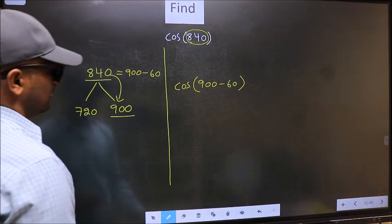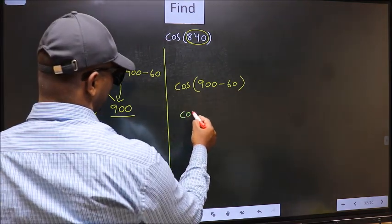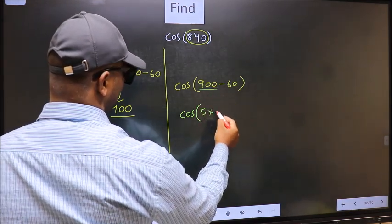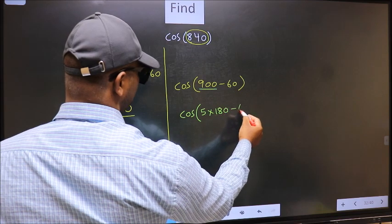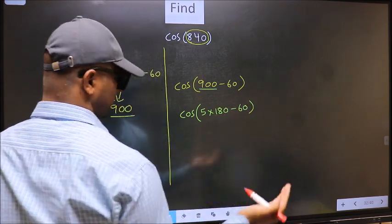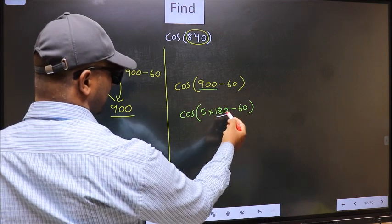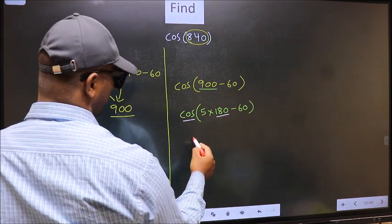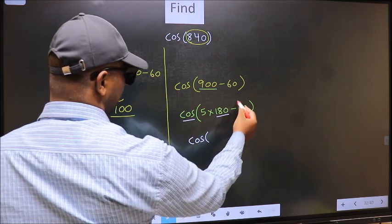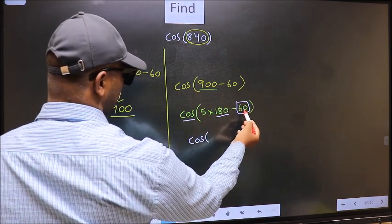Next, cos. In place of 900, we should write 5 into 180 minus 60. Here we have 180, so cos is not going to change. It will remain cos, and inside we get this angle 60.